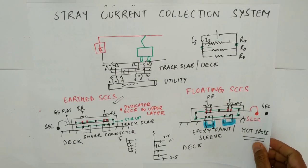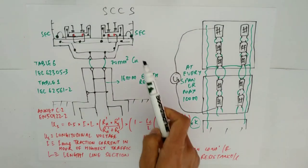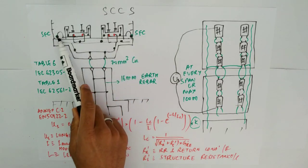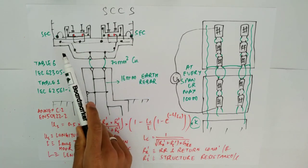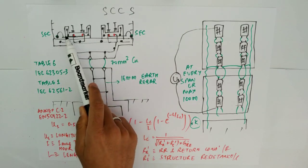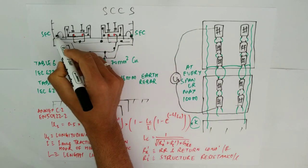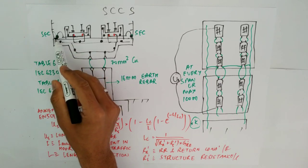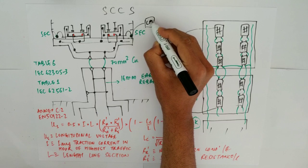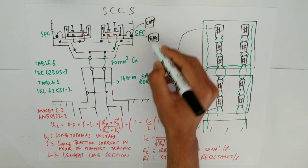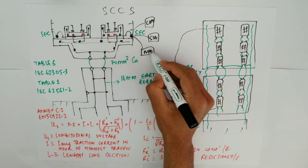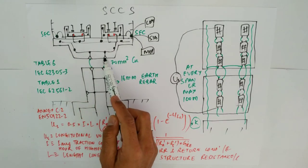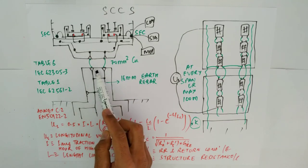For the complete structure, I have drawn the earth stray current collection system. We are having the SEC — that is your structural earth cable. This structural earth cable is also connected to the handrails or the brackets, the cable trays, along with equipments like comm equipments, signaling equipments, and MEP equipments along the path. Apart from that, we are having earth terminals below at the viaduct or the deck and also at the pier cap.